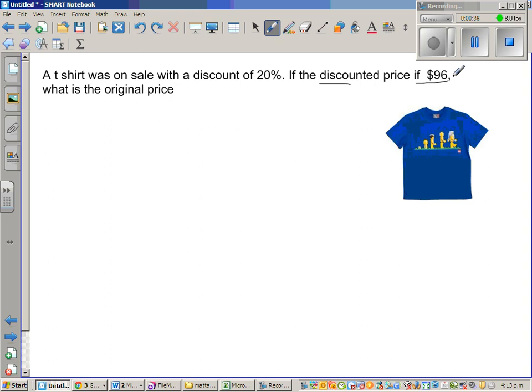So what's the original price? One of the mistakes that students tend to do is they find 20% of 96 and then add on 96. So let us do that and see whether the answer makes sense.